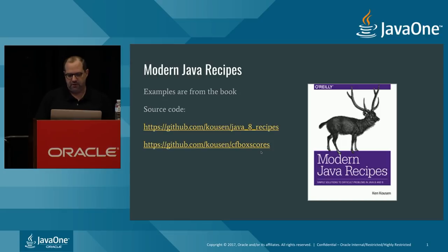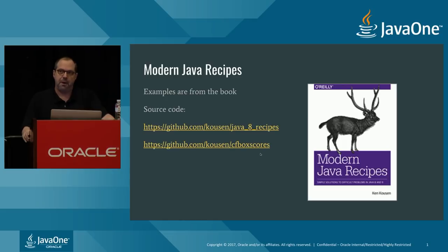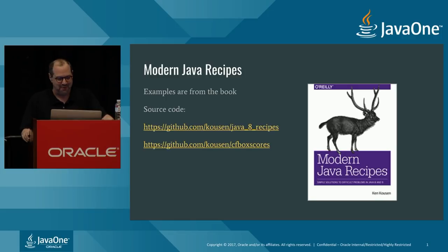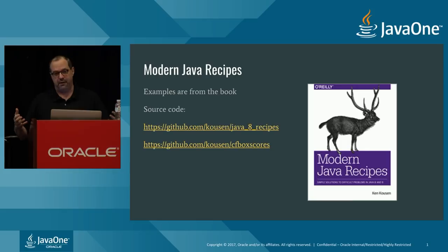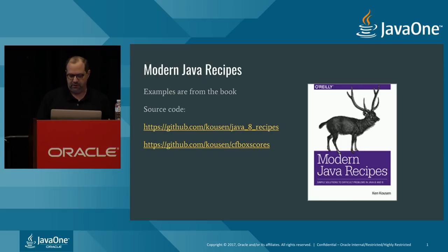These are the URLs for the GitHub repositories for the code I'm going to show you. The entire book repository is under github.com/cousin/java_eight_recipes. I also have a larger example called CF box scores under a separate repo. I'll download box score data from Major League Baseball online. There's also a repo called java_nine_recipes for the handful of Java 9 ones, but I'm not using that for this talk.